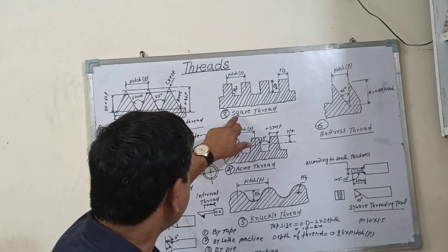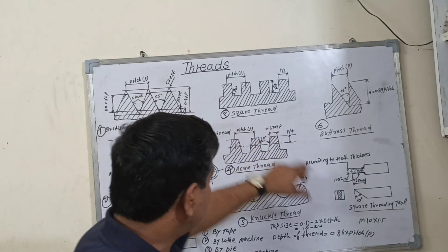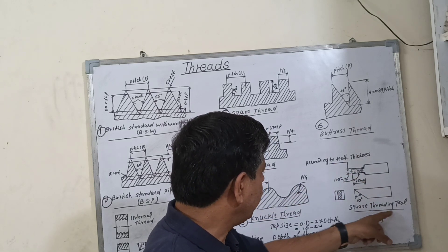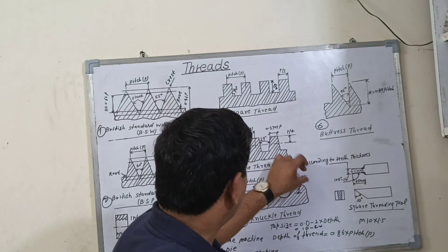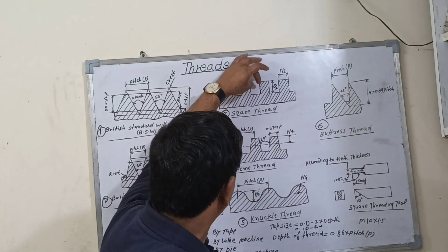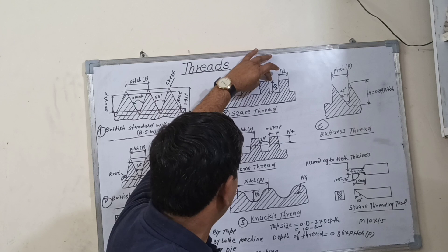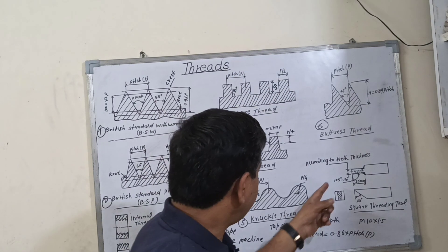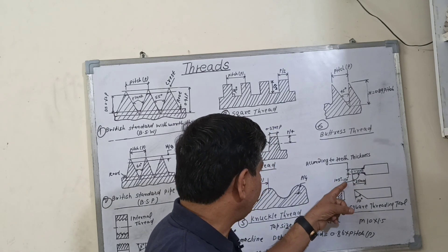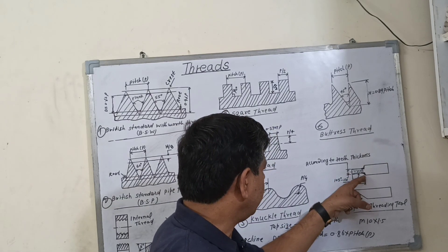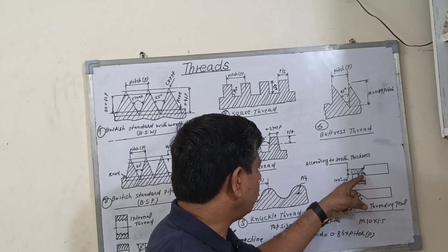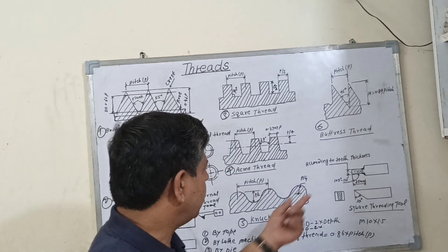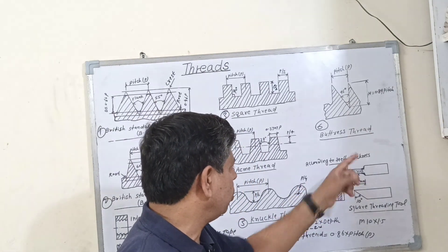If you want to cut the square thread, you will prepare the tool like this. This is a square threading tool. The thickness of this tool is prepared according to the thickness of the square thread. The taper angle is 105 to 110 degrees. This area should be rounded to increase the strength of the tool and to avoid damage. The thickness of the tool is according to the thread thickness.